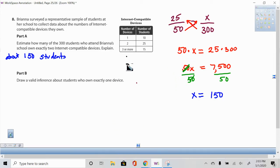Now the next question, part B says, draw a valid inference about students who own exactly one device. So we have to draw an inference on students who own exactly one device.